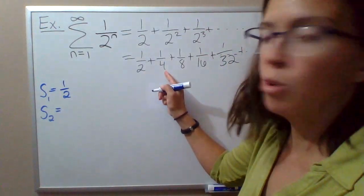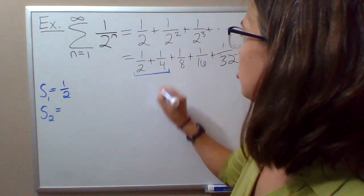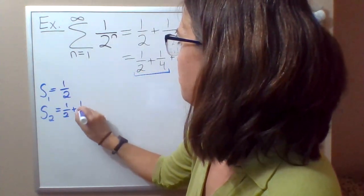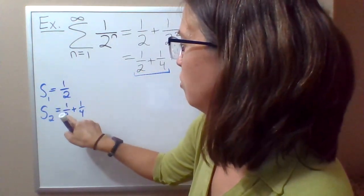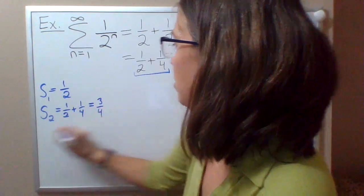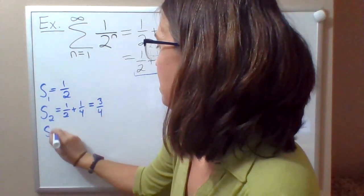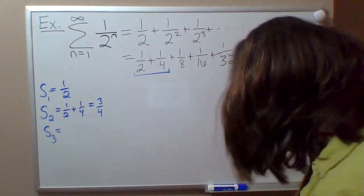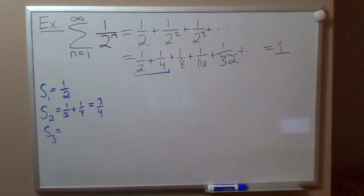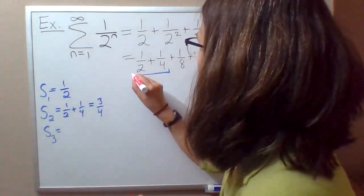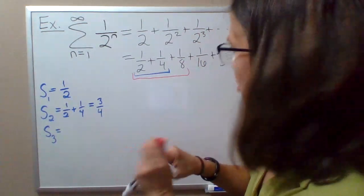If you get a common denominator there, 1 half plus 1 fourth, this is 2 over 4 plus 1 over 4, so 3 over 4. s3 is the sum of the first three terms. Notice now though, if we want the sum of the first three terms, we already know that the sum of the first two terms is 3 fourths.